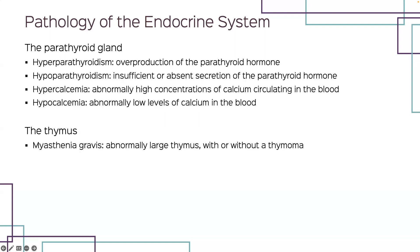For the parathyroid gland, you can have hyperparathyroidism and hypoparathyroidism, and then hypercalcemia and hypocalcemia. The major condition seen with the thymus is myasthenia gravis, where there is an abnormally large thymus with or without a thymoma, which is a tumor.